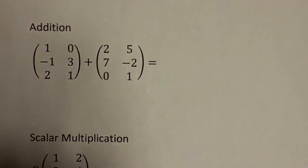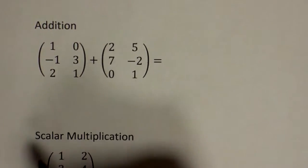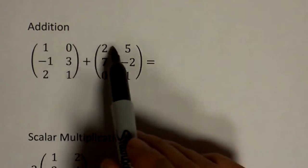Addition can be done between two matrices that have the same number of rows and columns. And the operation is very straightforward. You just add element by element.